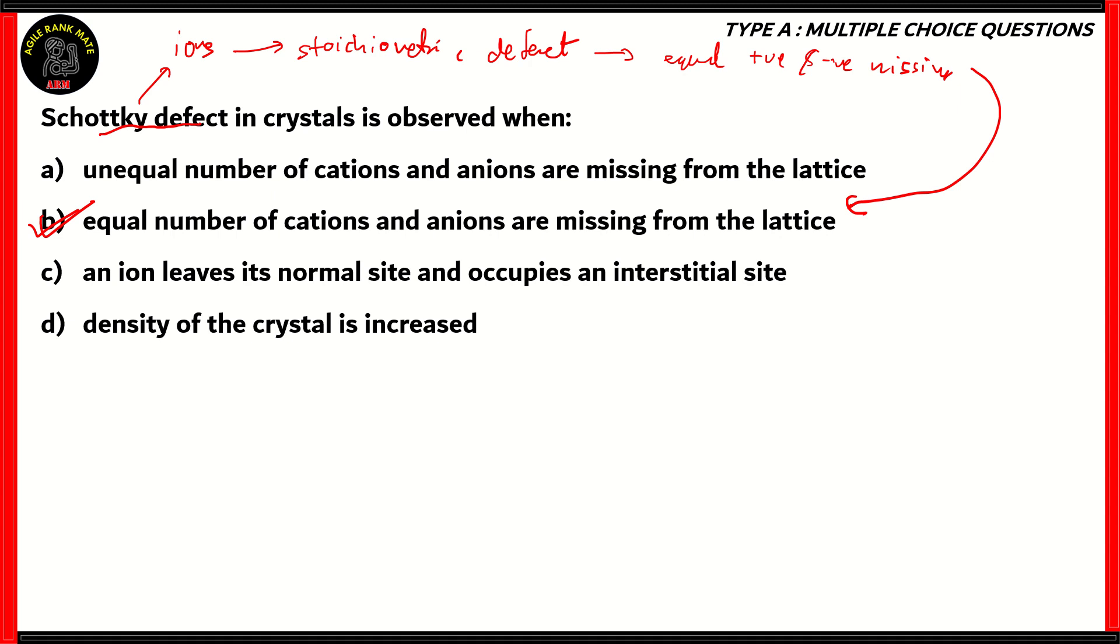The Schottky defect is observed when equal numbers of cations and anions are missing from the lattice. In the stoichiometric defect, equal number of cations or anions, or equal numbers of the constituent atoms or molecules are missing. That's what we call a Schottky defect.